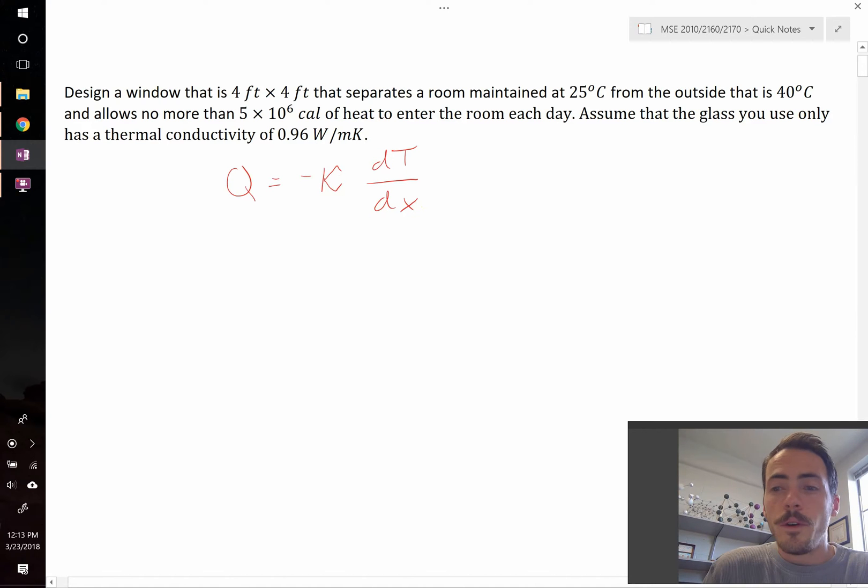Now technically we know that Fick's first law has to do with flux of something, and flux is an amount of something per area per time. But in this equation Q, that's just an amount of something that's not per area per time. So technically the correct way would be to write Q per area per time. Sometimes that gets left off, but the units actually don't work out on the left-hand side to equal the units on the right-hand side if we don't account for that.